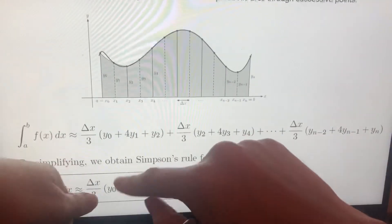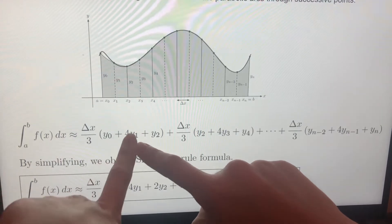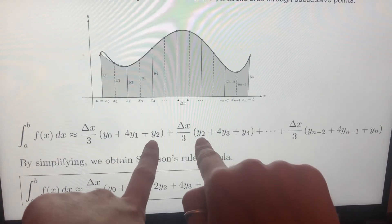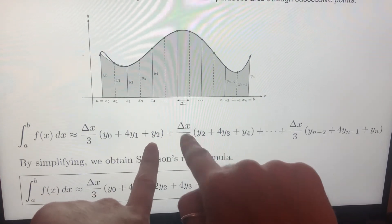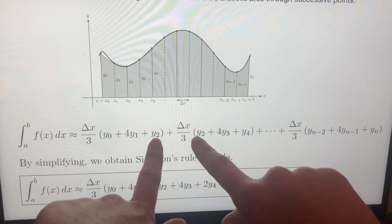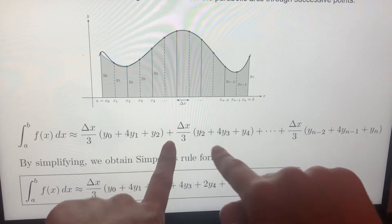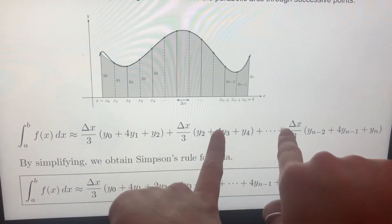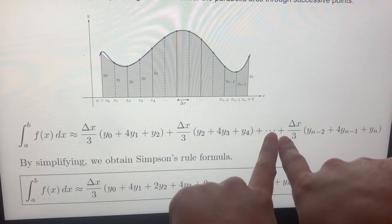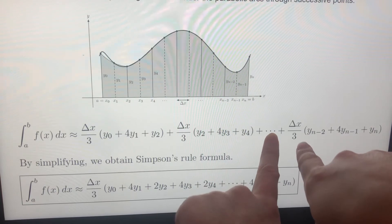And if you check that, we have y zero here, y four, y one here. Look at that. There is one y two here, one y two there. So if you sum them up by factoring out delta x over three, you'll have two y two, then four y three, and another y four is going to come here, two y four, and four y five.